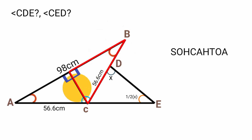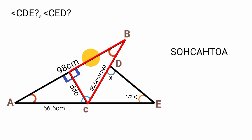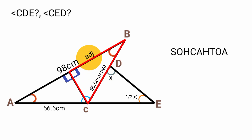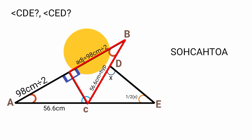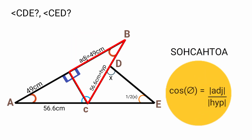From the chosen angle, the opposite side is across from it, the hypotenuse faces the right angle, and the adjacent is the remaining side. We have the hypotenuse of 56.6 centimeters. Since the full base AB is 98 centimeters and the bisector splits it in half, the adjacent side is 98 divided by 2, which equals 49 centimeters. So cos θ equals 49 over 56.6.